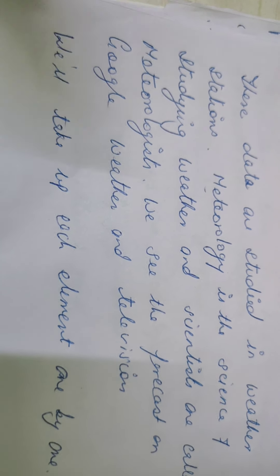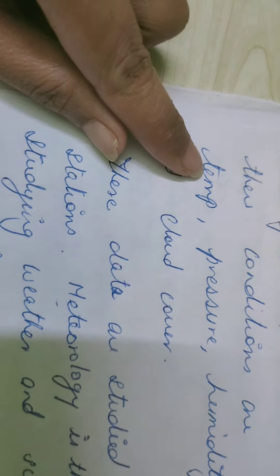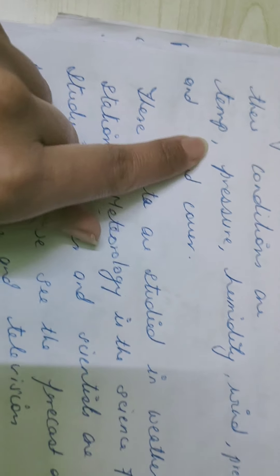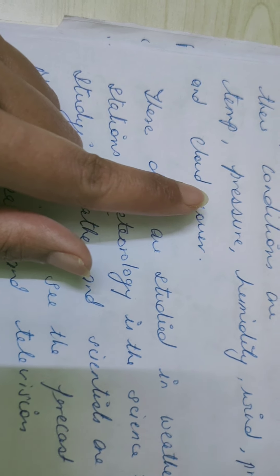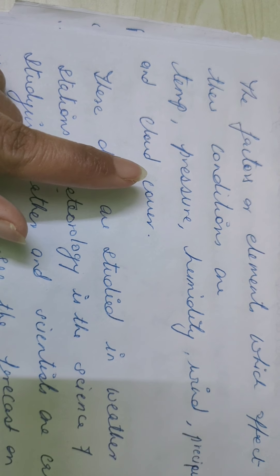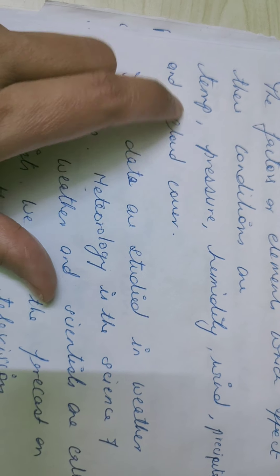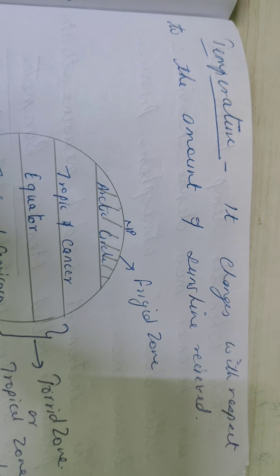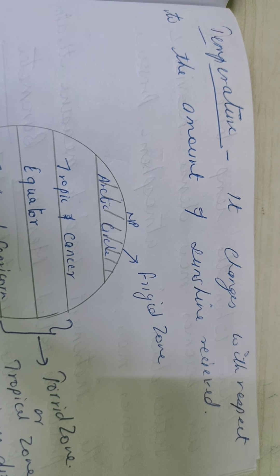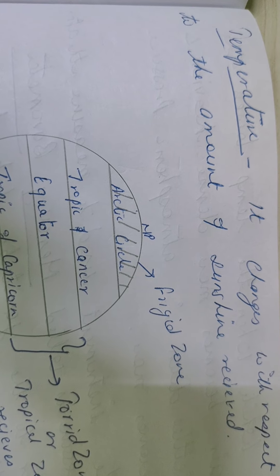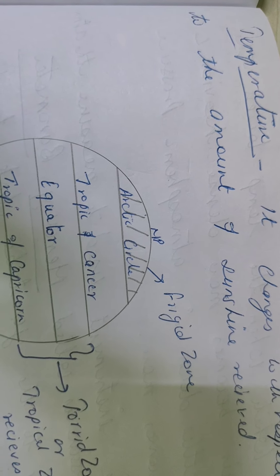We will take up each of these elements — temperature, pressure, humidity, wind, precipitation — one by one, and we will discuss them along with the instruments used to measure them. The first one is temperature. Temperature is the degree of hotness or coldness of a body, and it changes with respect to the amount of sunshine received.